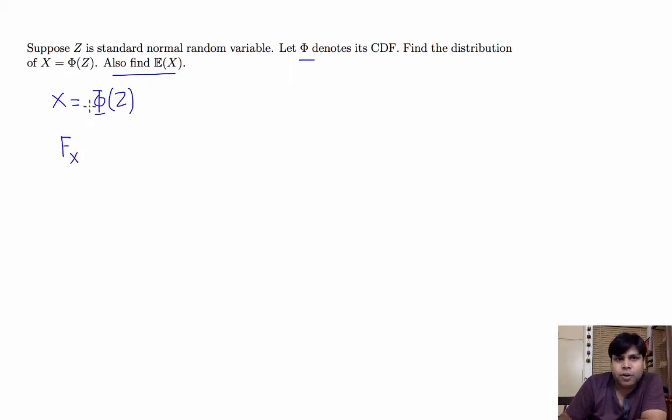Since we already know that Phi always takes values between 0 and 1, this random variable capital X always takes values between 0 and 1. So let us find the value of the CDF at any number little x in [0,1]. By definition, the CDF of capital X evaluated at little x is equal to the probability that capital X is less than or equal to little x. Now we're going to replace capital X by Phi of Z.